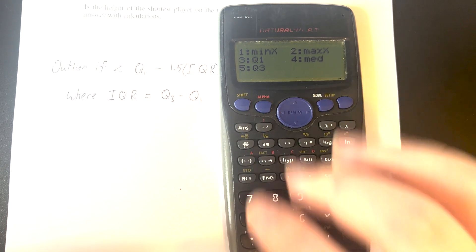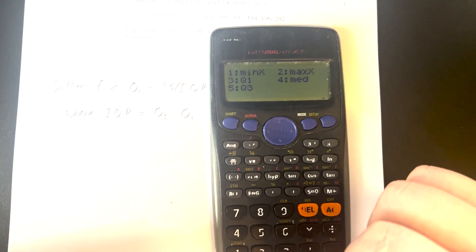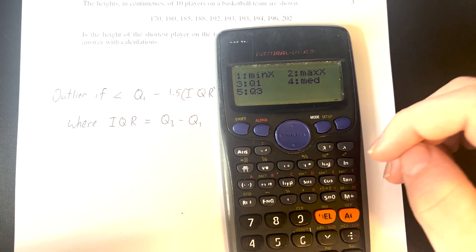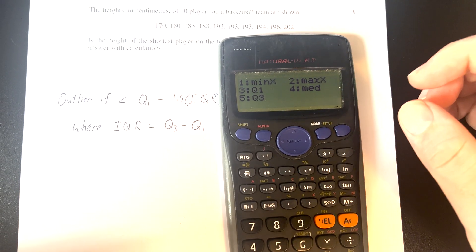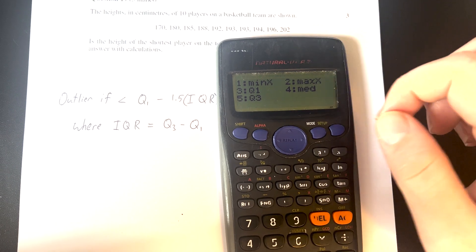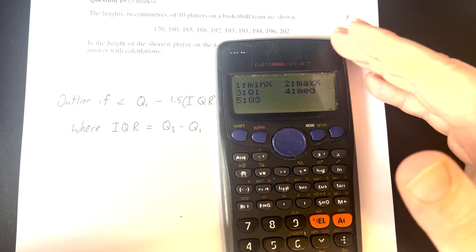Now it brings up all the different quartile values we could ask for. Option 1 would display the minimum value, or Q0, which here would give us a value of 170. Option 2, the max value, would give us Q5 or the maximum value, here 202.